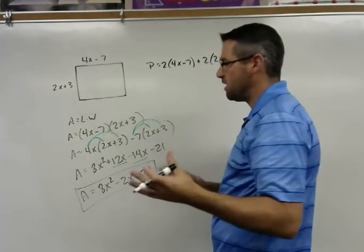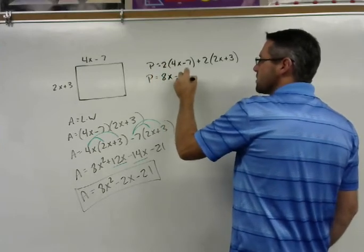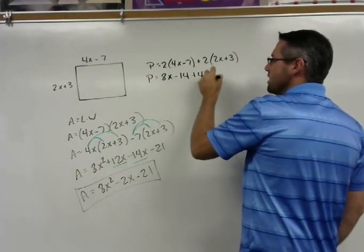Now, if you added it all up, just make sure you have 4 things, you should still get the same answer. Go ahead and distribute it here. So we end up with 8x minus 14 plus 4x plus 6.